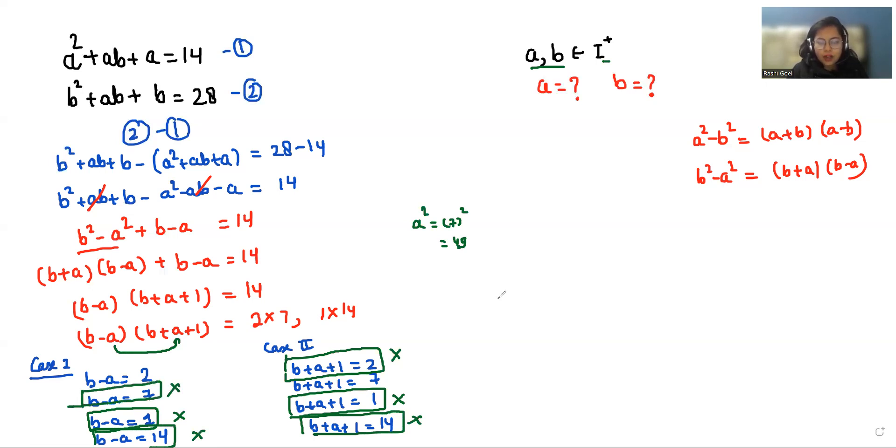So what two cases are left? Either b - a = 2 or b + a + 1 = 7, so we are going to solve this.